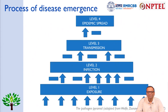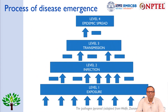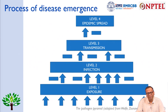The process of disease emergence is extremely important. If we proceed from the bottom to top, the first level is exposure. When one gets exposure to the pathogen, there is a possibility it goes to level 2, which is infection. Once infection occurs, there is a possibility of transmission. If transmission occurs, it goes to level 3, and from there it will become an epidemic when it spreads to other people as well, reaching level 4.